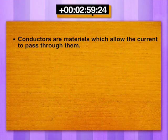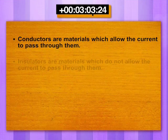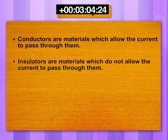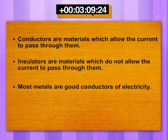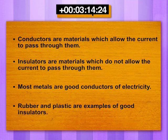Conductors are materials which allow the current to pass through them. Insulators are materials which do not allow the current to pass through them. Most metals are good conductors of electricity. Rubber and plastic are examples of good insulators.